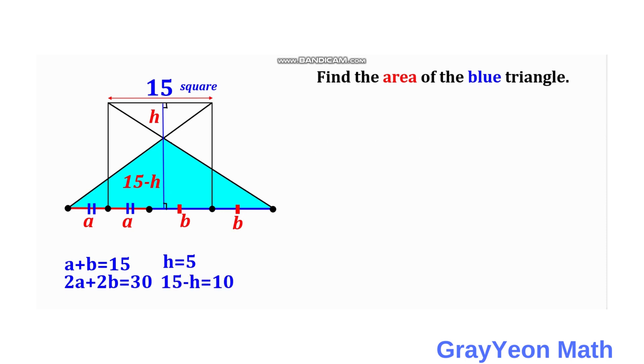So now we are ready to find the area of the blue triangle. So area is equal to 1 half times the base times the height. But in this case,